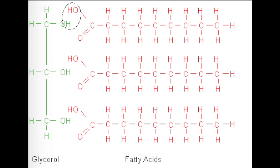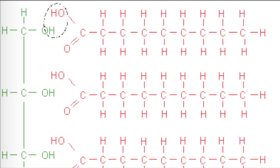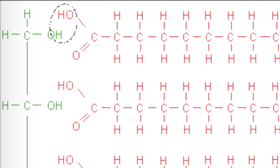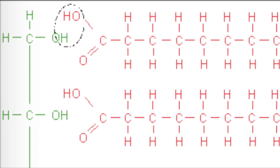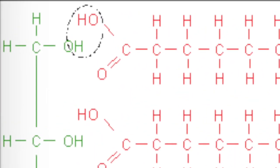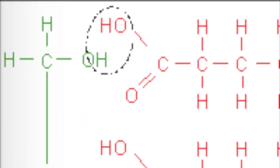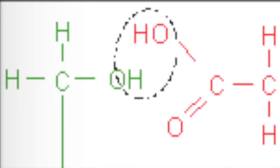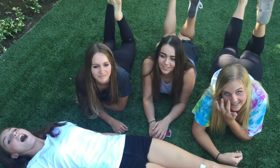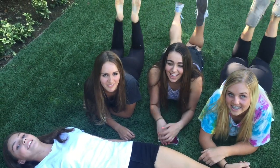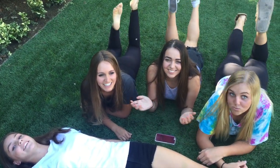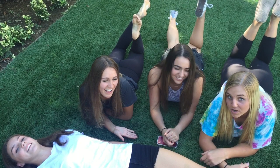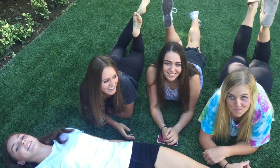When a plant or animal produces a triglyceride, it connects each of the fatty acid chains to the glycerol backbone through a process called dehydration synthesis. In this process, two hydrogen atoms and one oxygen atom are removed between each chain, producing water molecules. A lipid is not a polymer — the glycerol backbone and fatty acid tails are all different, but together they make up one molecule.